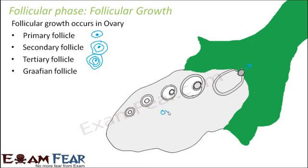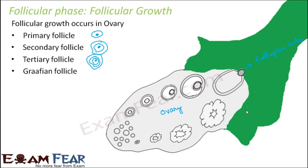The ovary releases the egg into the fallopian tube. The ends of the fallopian tube have finger-like projections that push the egg into the tube. As soon as the egg is released, ovulation has taken place. The process doesn't stop inside the ovary even after ovulation — the remains of the Graafian follicle form another structure called the corpus luteum, and this process also keeps on continuing.